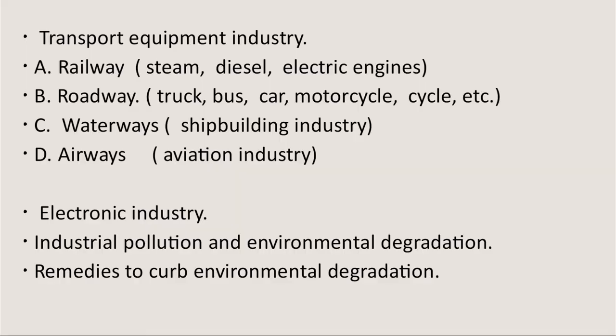The next point is transportation equipment industry. It is divided into four: roadway, railway, waterways and airways. In roadways, for example, we manufacture road vehicles like trucks, bus, car, motorcycle, cycle etc. India ranks fifth in the world in the production of commercial vehicles. Today we are exporting vehicles and also spare parts to different foreign countries.